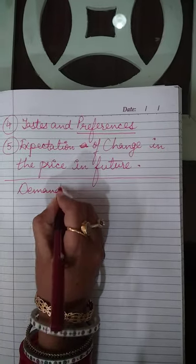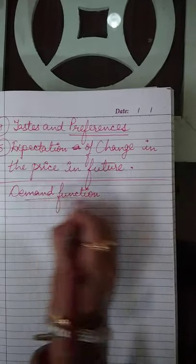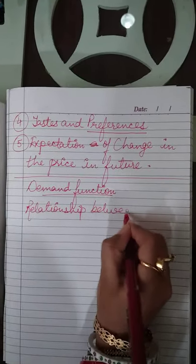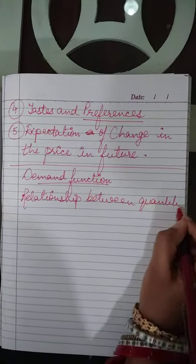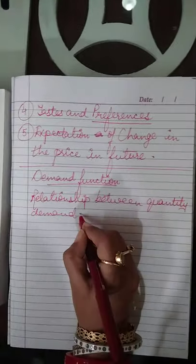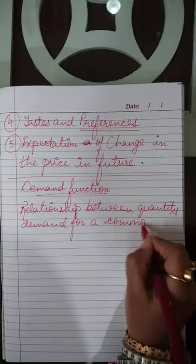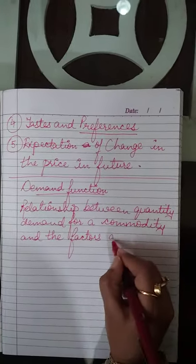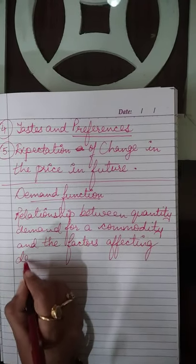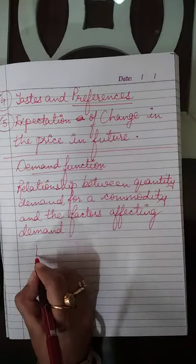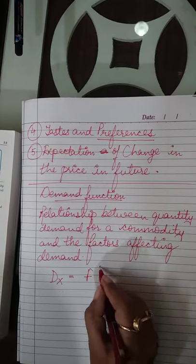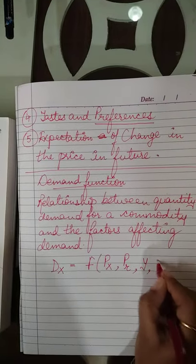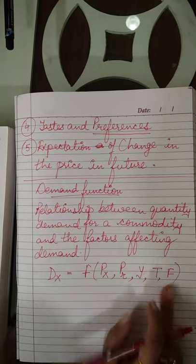Next topic is demand function. The demand function shows the relationship between quantity demanded for a commodity and the factors affecting demand. Demand of commodity X is a function of: price of commodity X (Px), price of related goods (PR), income of consumer (Y), taste and preferences (T), and expectation of change in price in future (E).